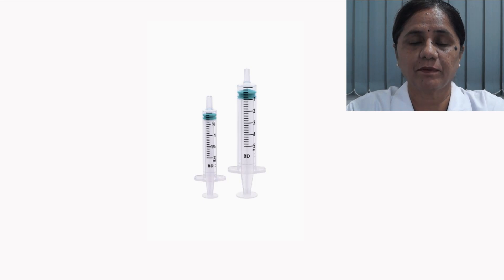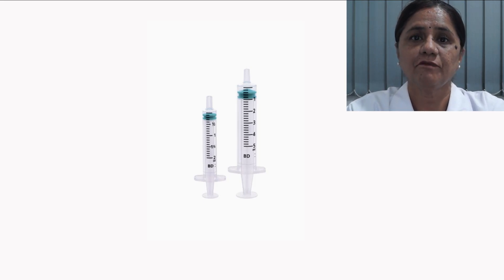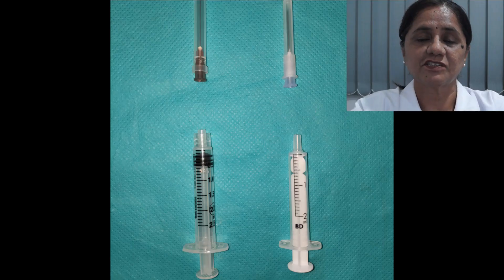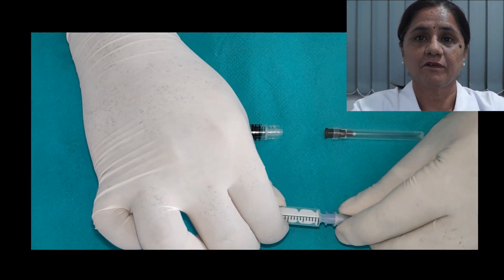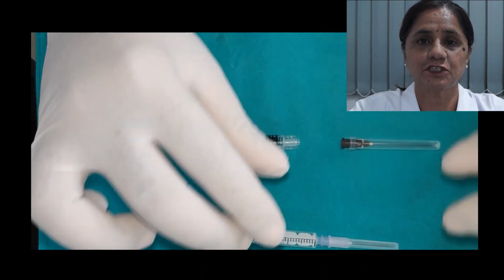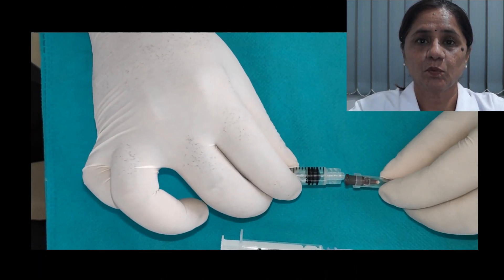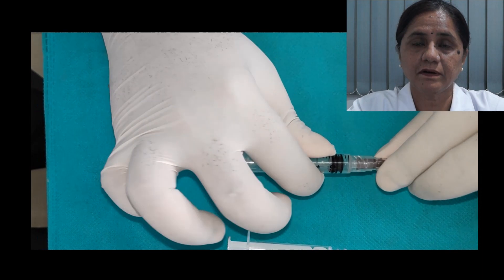The syringes commonly used are 2 ml or 5 ml, depending on the amount of local anesthetic solution needed at the time of the appointment. The syringe has either a lure slip or lure lock system. The lure slip system works on friction between the hub and the syringe, whereas the lure lock system has an extension with a thread design over which the needle screws on.